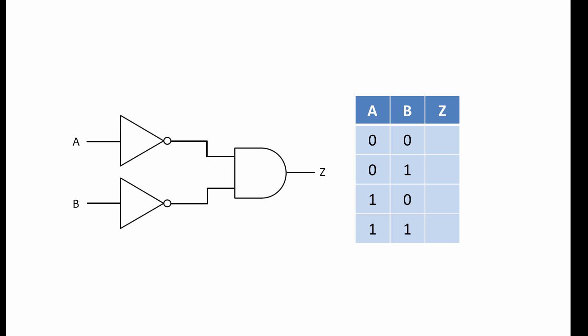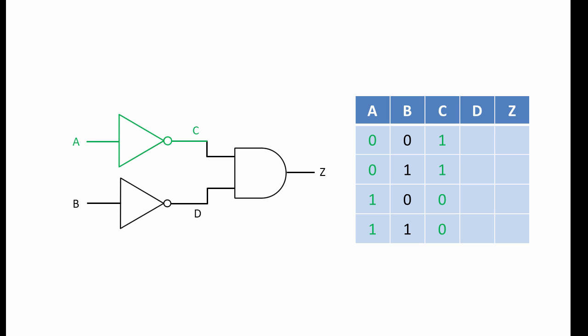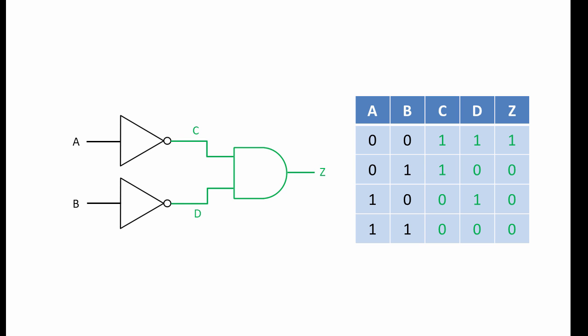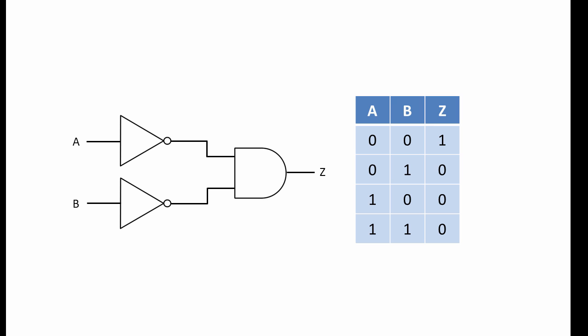Here is another example. Perhaps you would like to give this one a go yourself. Pause the video now if you would like to try it, and resume in a few minutes and I will show you the solution. Just like we did before, it is useful to consider points C and D. Each value of C is the result of passing each value of A through a NOT gate. Each value of D is the result of passing each value of B through a NOT gate. Now that we have values of C and D, we can pass combinations of these through an AND gate, giving us each value of Z. Here is our truth table. You might have noticed that this is the same truth table as the NOT OR combination you saw earlier.